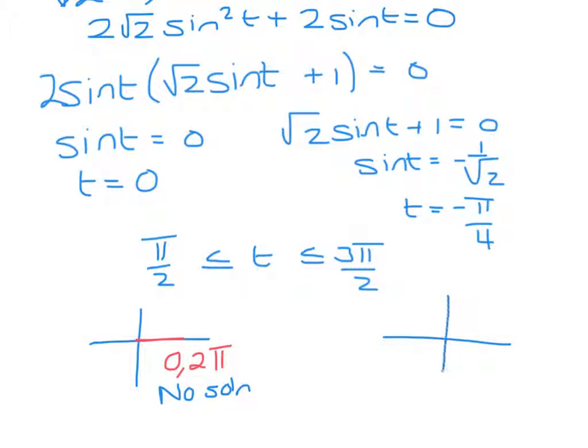And if I draw a cast diagram for our second solution, then I can see that my angle is going to be pi plus pi over 4, which is 5 pi over 4. So t equals 5 pi over 4.